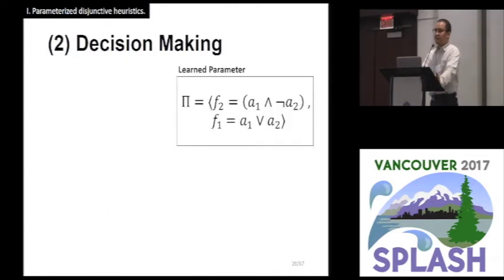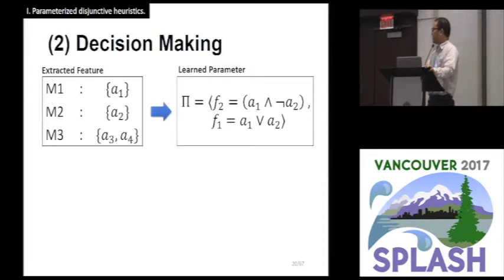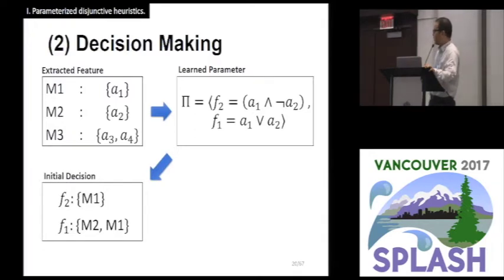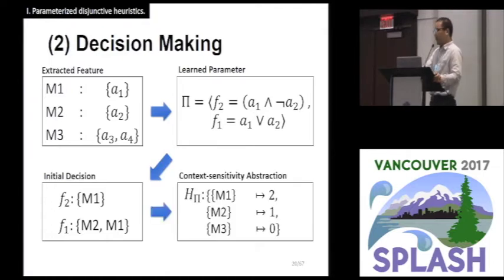Now we can talk about how heuristic H and parameter pi work together. The parameter pi is a list of disjunctive normal form boolean formulas. For two context-sensitivity analysis, we need two boolean formulas, F1 and F2. Each boolean formula stands for one context depth. If a method satisfies Fk, each invocation gets k-context steps. Applying pi to the extracted feature set results in this initial decision. The method M1 satisfied F2, and method M2 and M1 satisfied F1. As you can see, there is a conflict. Method M1 belongs to both F2 and F1. In such cases, we simply prioritize deeper context, in this case F2, because it makes the heuristic more precise. And those who don't belong to any of these formulas, in this example M3, get zero, which means context-insensitive analysis. The final result is a context-sensitivity abstraction.